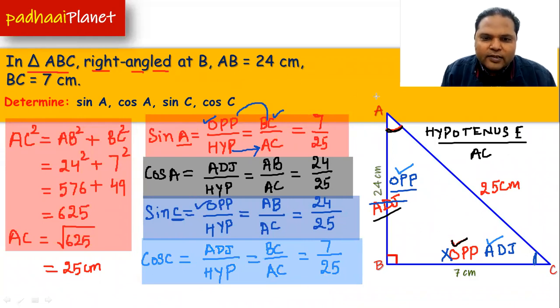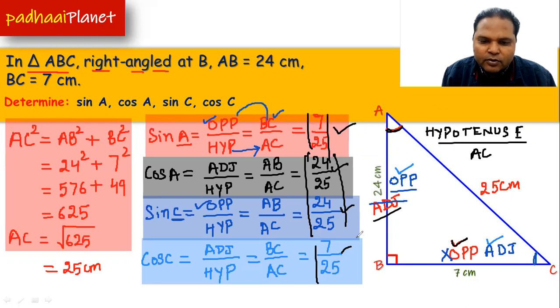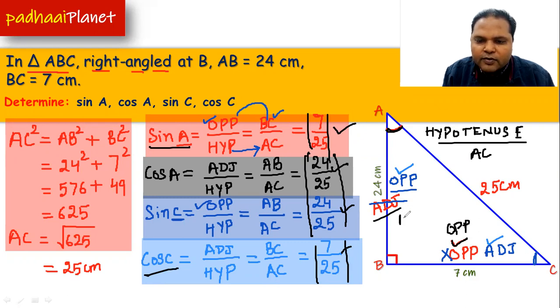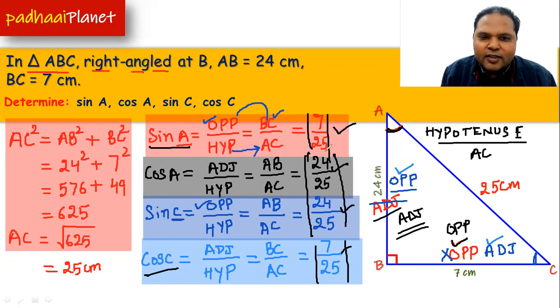You can clearly see how all these values are different from each other, but the formula remains the same. Sin A and cos C are the same value, and sin C and cos A share the same value. All we need to remember is that whichever angle we are referring to, the side opposite to that angle is the opposite, and then we simply apply the formulas. I hope you could understand all of this and found it useful. Keep watching these videos and I'll be coming up with more. Thank you so much and have a nice day. Bye-bye.